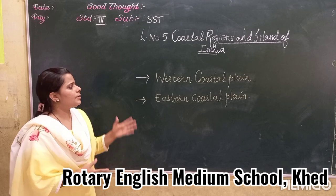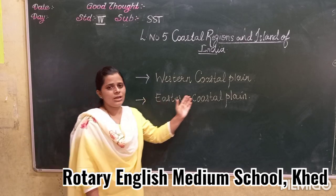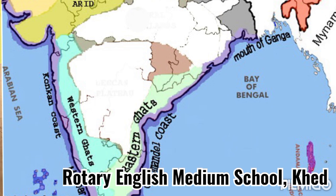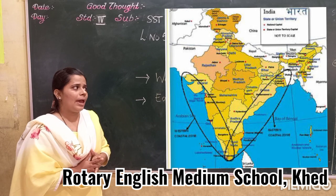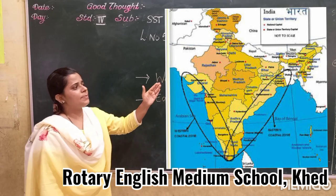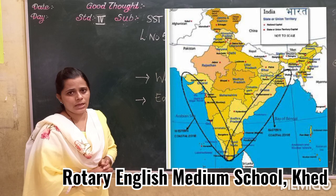Now let's move to the eastern coastal plain. The eastern coastal plain lies between the Eastern Ghats and the Bay of Bengal. It stretches from West Bengal to Tamil Nadu, as you can see in the map.